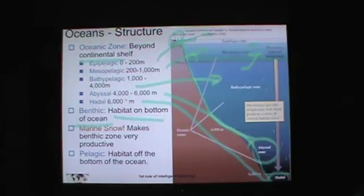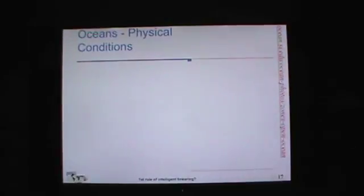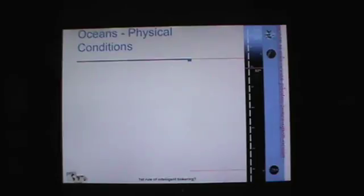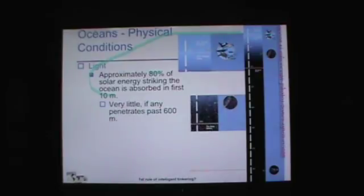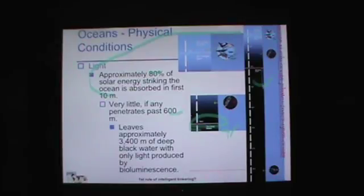Some physical conditions: light doesn't last very long in the ocean. Approximately 80% of the solar energy striking the ocean is absorbed in the first 10 meters — even that line is too thick to represent 10 meters. Very little light goes past 600 meters; it's pretty much dark below 600 meters. That leaves about 3,400 meters of deep black water where the only light is produced by bioluminescence — or by having eyes the size of dinner plates, like that squid we saw earlier.